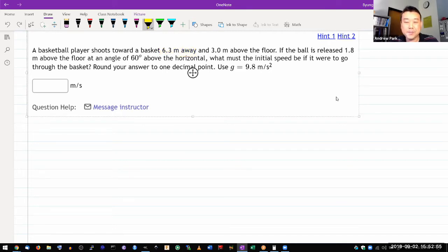Distance away and height above the floor. If the ball is released 1.8 meter above the floor, at an angle of some angle above the horizontal, what must the initial speed be if it were to go through the basket?